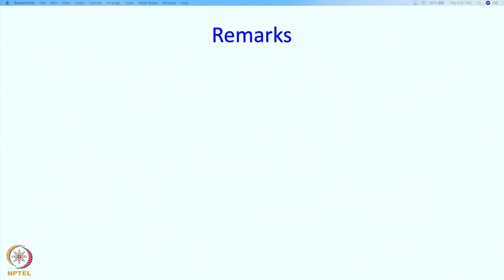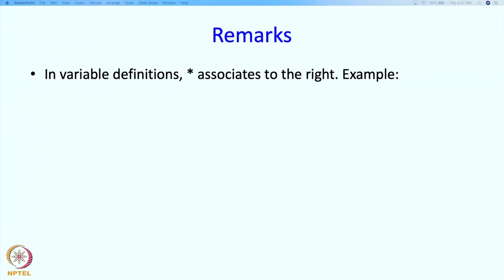And that is what pointers enable you to do. There is a remark to be made: * in definitions has slightly unexpected behavior. The star actually associates to the right. Suppose I write int* v, p. I might be inclined to read this as: int* is the type, so both v and p are of type int*. But that is not how C++ has defined it.